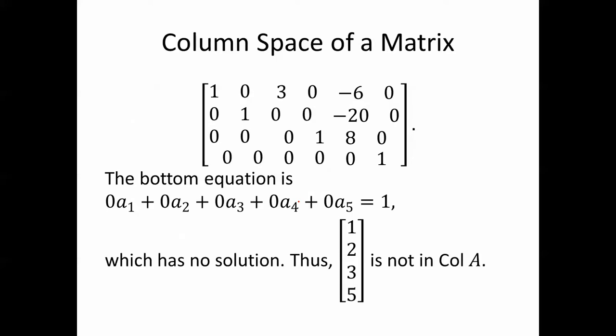Notice the bottom equation is 0 equals 1. You can't have 0 equals 1 — that has no solution. Therefore, (1, 2, 3, 5) is not in the column space of A. There are no constants A1, A2, A3, A4, A5 such that you can use those to form a linear combination of the columns and get (1, 2, 3, 5). Not going to happen.